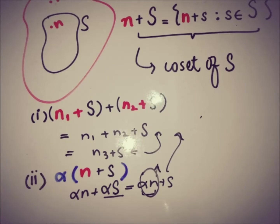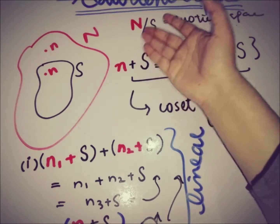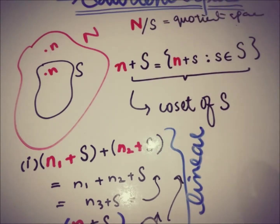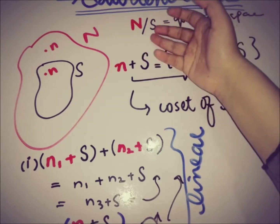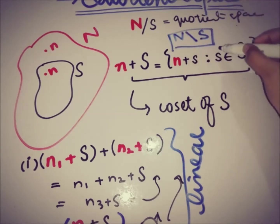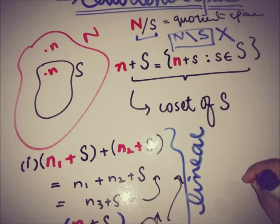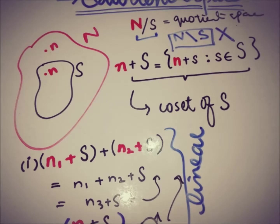So n plus S is a coset that is a linear space under addition and scalar multiplication. The set of all cosets of S in N is called the quotient space of N by S, and is denoted N/S. An important point: the notation N/S — where N is a normed space and S is a subspace — is the notation of the quotient space, not a set difference. The dimension of this quotient space is called the deficiency of the subspace S.